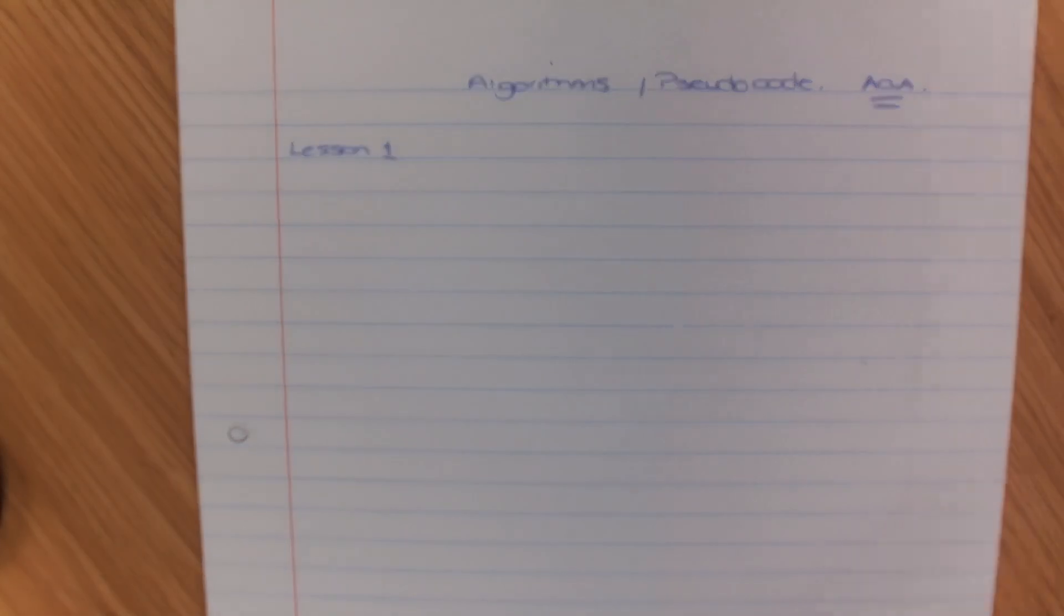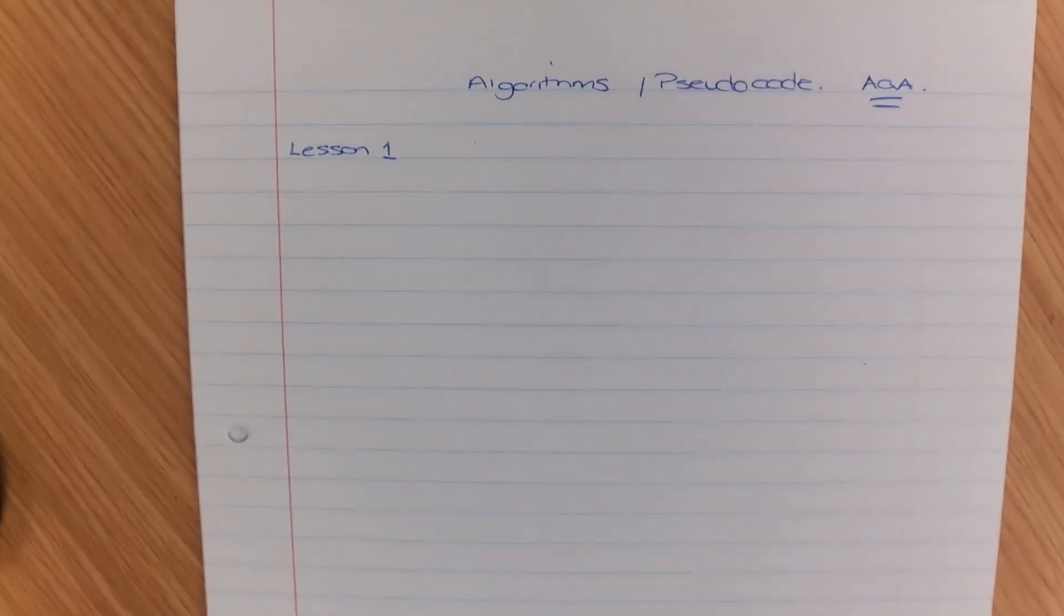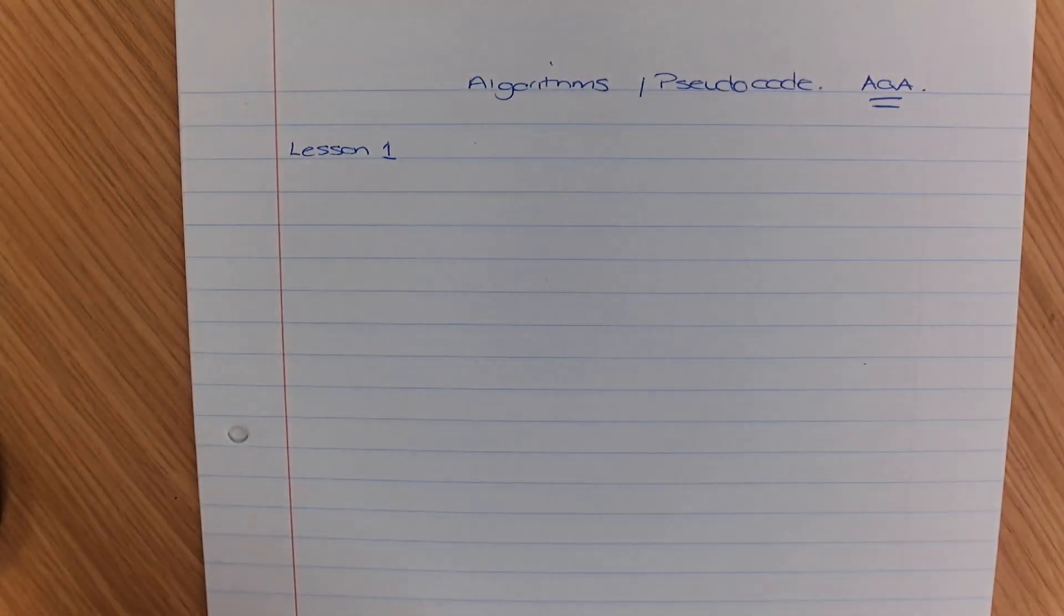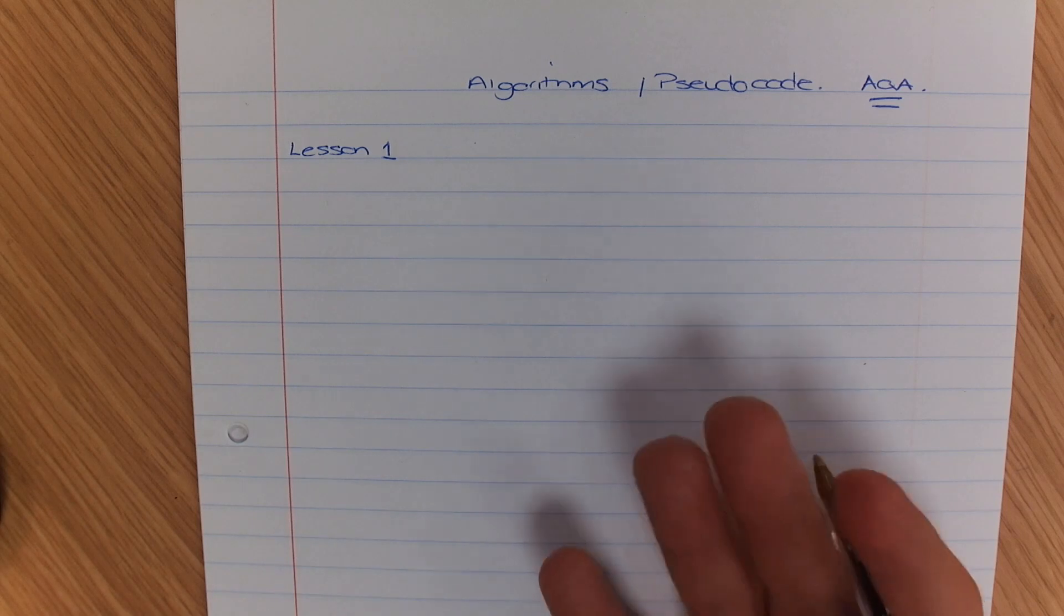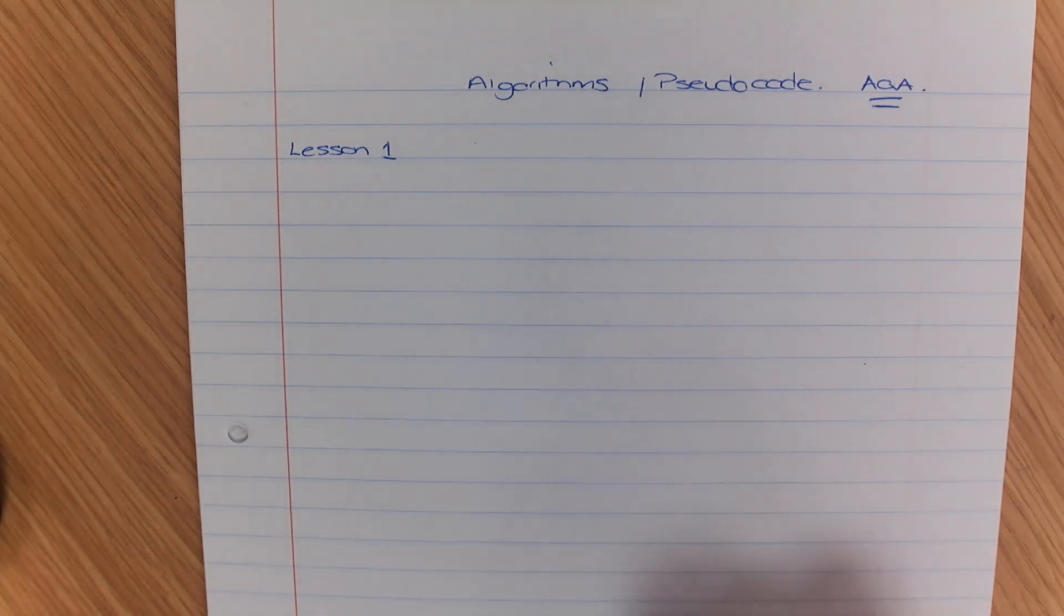Now I'm just going to sort out the focus so that you've got a better view there. All right, so what I'm going to do first is I'm just going to do some simple basic code and we're just going to practice writing, getting some input and outputting that on the screen.